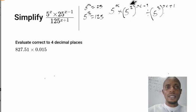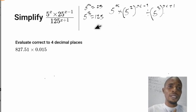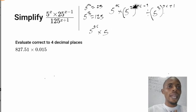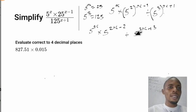Remember, according to the law of indices — the power of a power rule — when you have a power raised to another power, you multiply them. So opening the brackets: 2 times s gives 2s, and 2 times minus 1 gives minus 2. Then in the denominator, 3 times s gives 3s, and 3 times 1 gives plus 3. So we have 5^s × 5^(2s − 2) ÷ 5^(3s + 3).